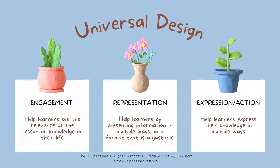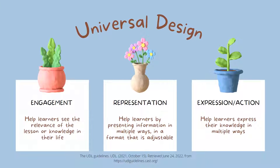Universal Design for Learning is made up of three main components: engagement, representation, and expression. The engagement piece helps learners see the why of learning — how we motivate the learner to get into the lesson. In my own classroom, I try to connect to my students' background, as they are almost all Native American, making the lesson relevant to their lives. Providing multiple means of engagement will help to get all learners on board.